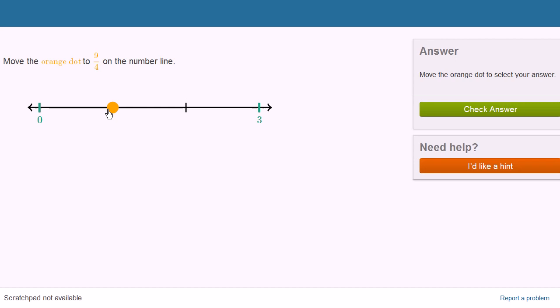So you could use 2 and 1 fourth. You could say this is 1, 2, and then we have to go 1 fourth of the way between 2 and 3. So that looks like about 2 and 1 fourth.